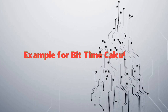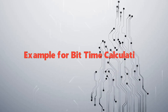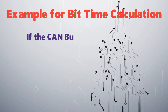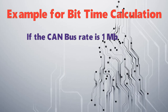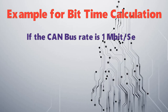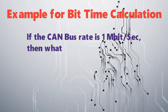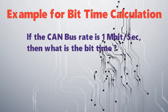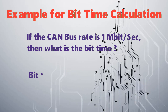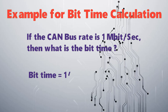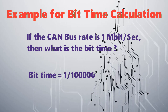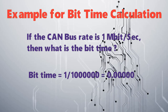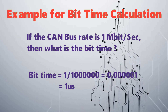Let's take an example for calculating the bit time. If the CAN bus rate is 1 megabit per second, then bit time is equal to 1 / 1,000,000,000 — that is 0.000001, which is 1 microsecond.